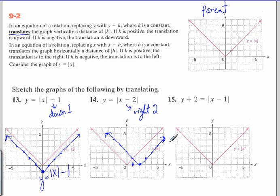The translation of these graphs. The blue graph here is y equals absolute value of x minus 2. That's this one.